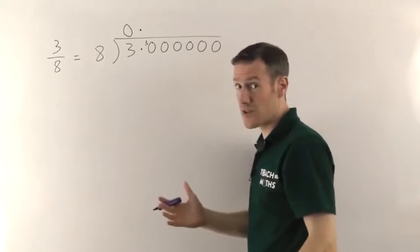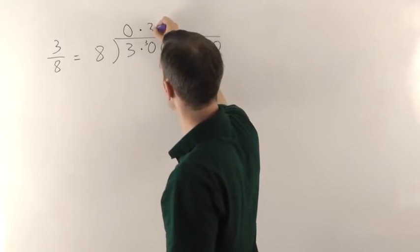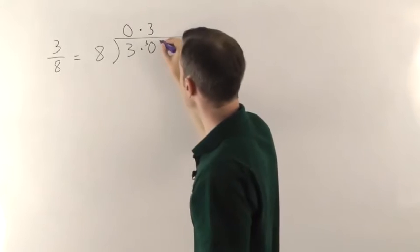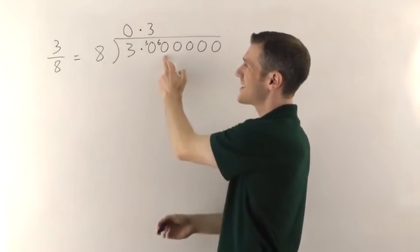Well 8s into 30 you're going to go 3 times. 3 8s are 24. And from 24 up to 30 the remainder is going to be 6. So you put a 6 there.